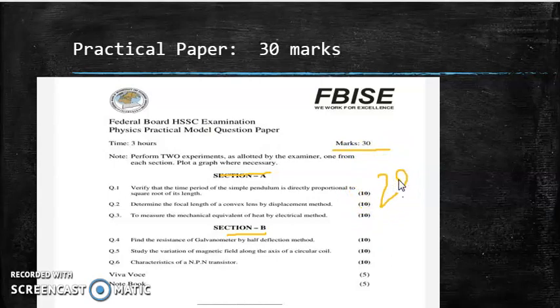The remaining 10 marks are from viva and notebook. Viva carries 5 marks and notebook carries 5 marks. So 20 plus 10 becomes 30 marks. These are the paper patterns and the marking schemes.